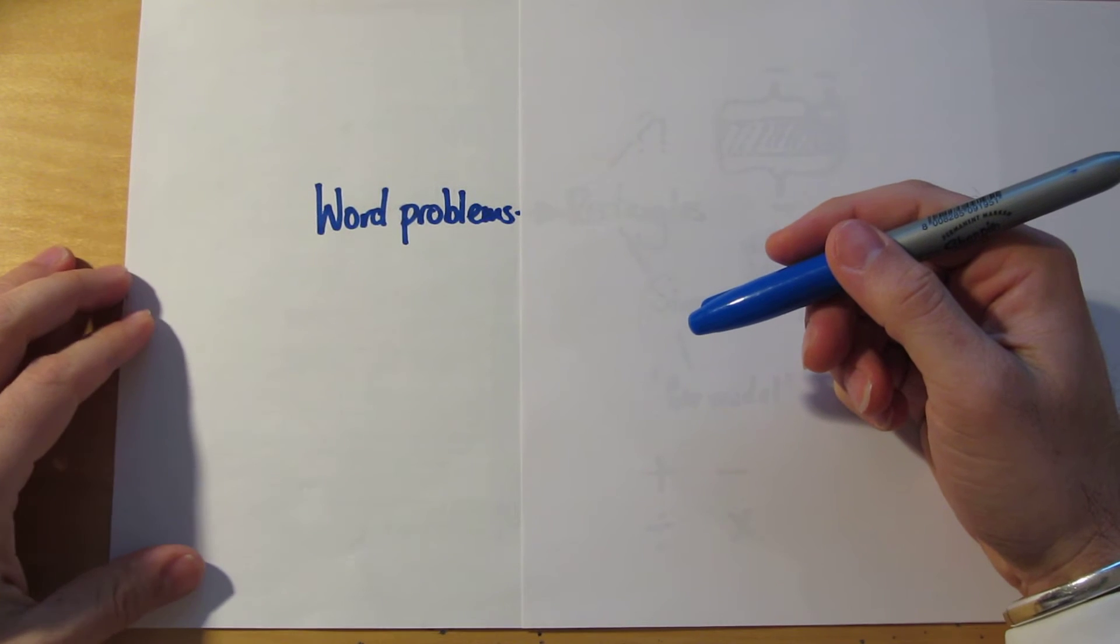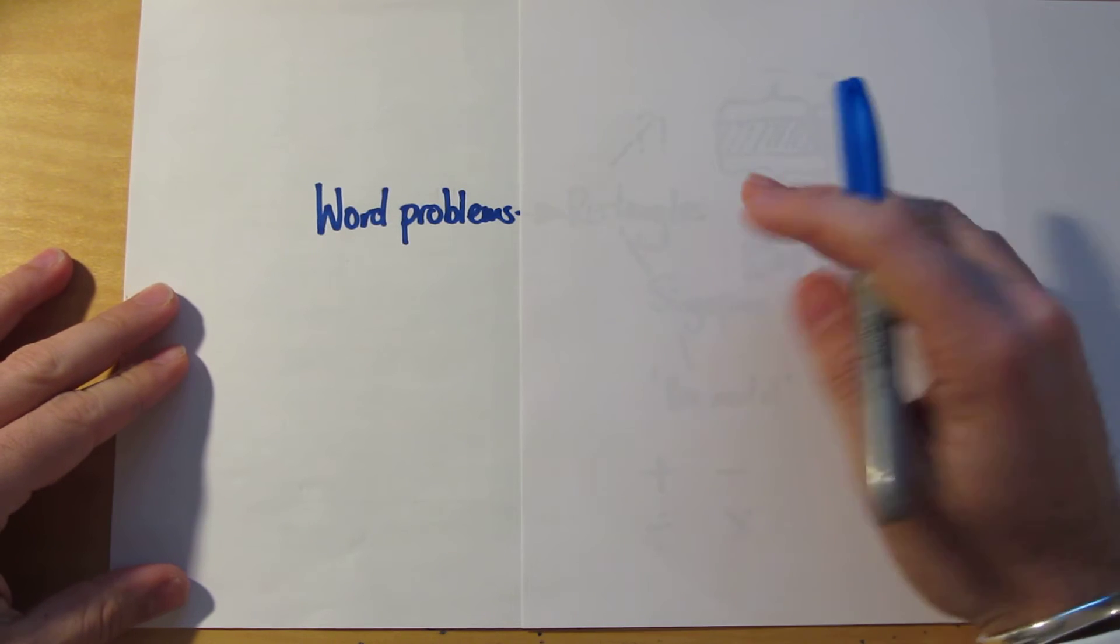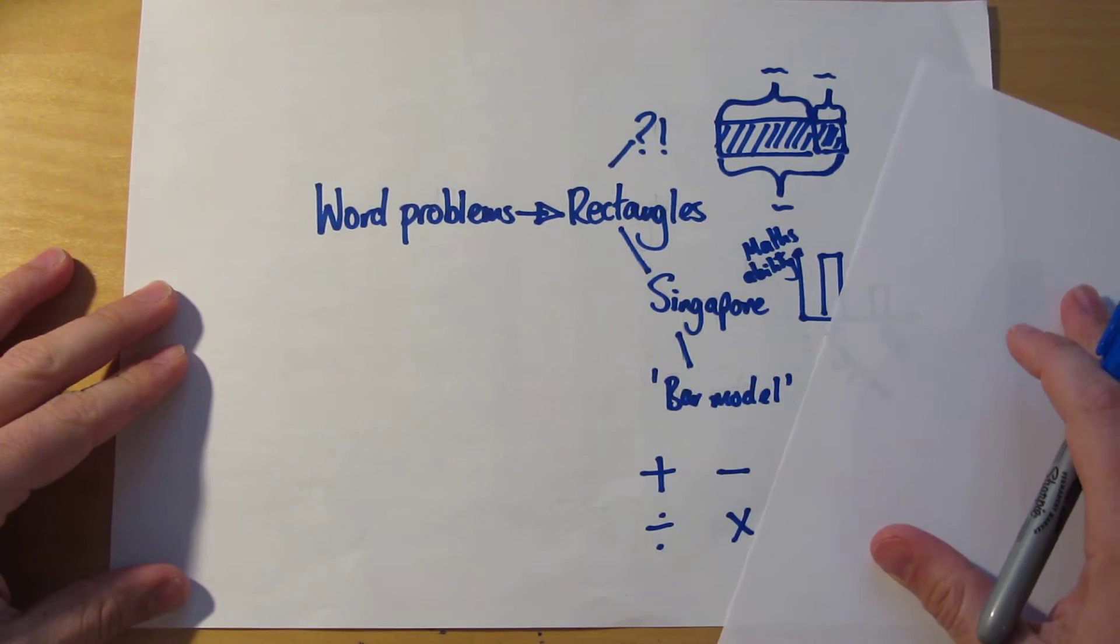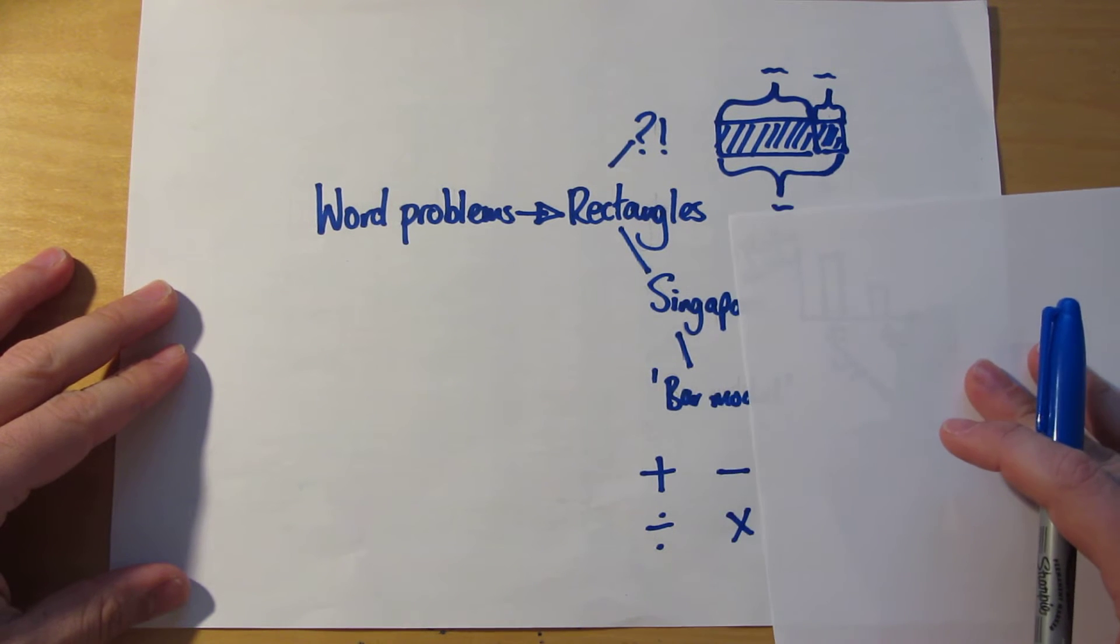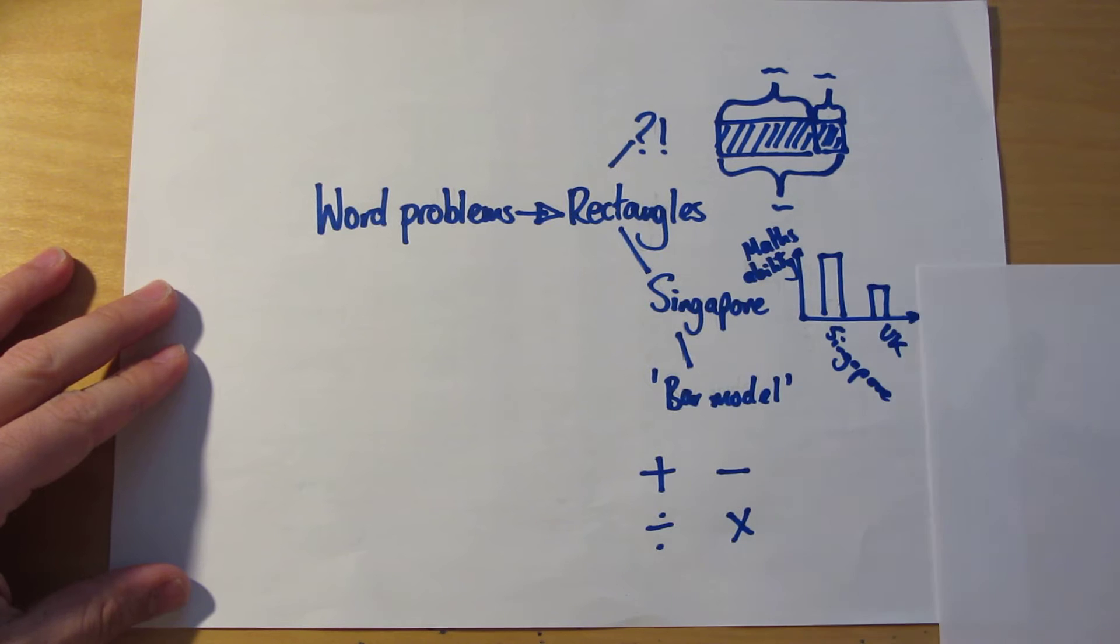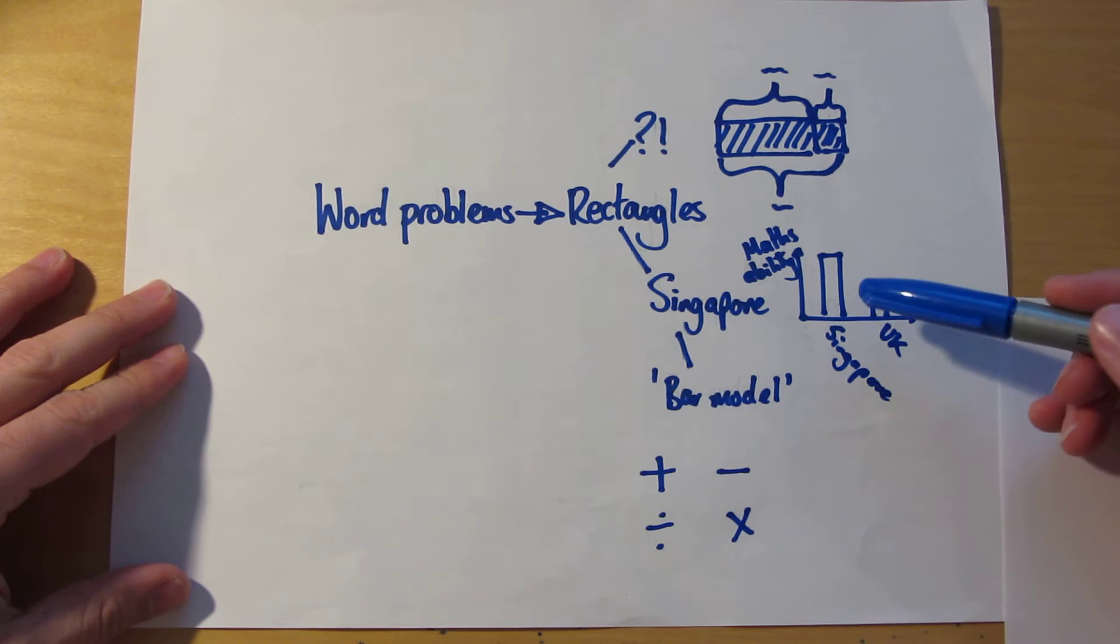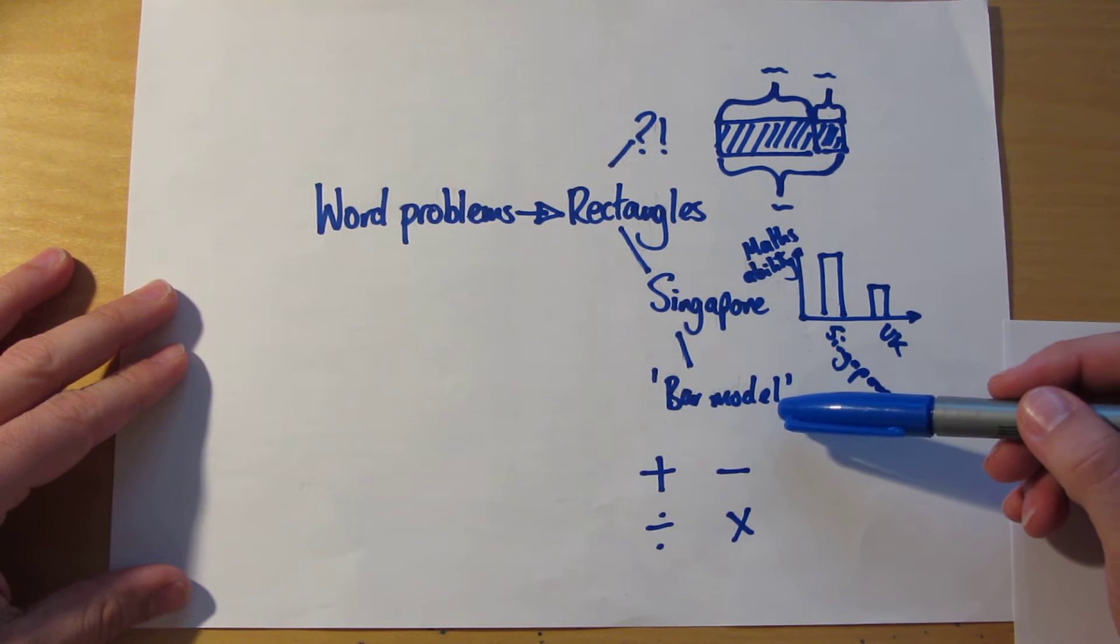Hi. In this video, I'm going to show you how to turn word problems into rectangles. It might sound strange, but actually turning word problems into rectangles is a very effective strategy for solving those problems. It's something that people in Singapore learn to do from a very young age, and one of the reasons why their maths ability is so high. By the way, this method of solving problems using rectangles is called using a bar model.